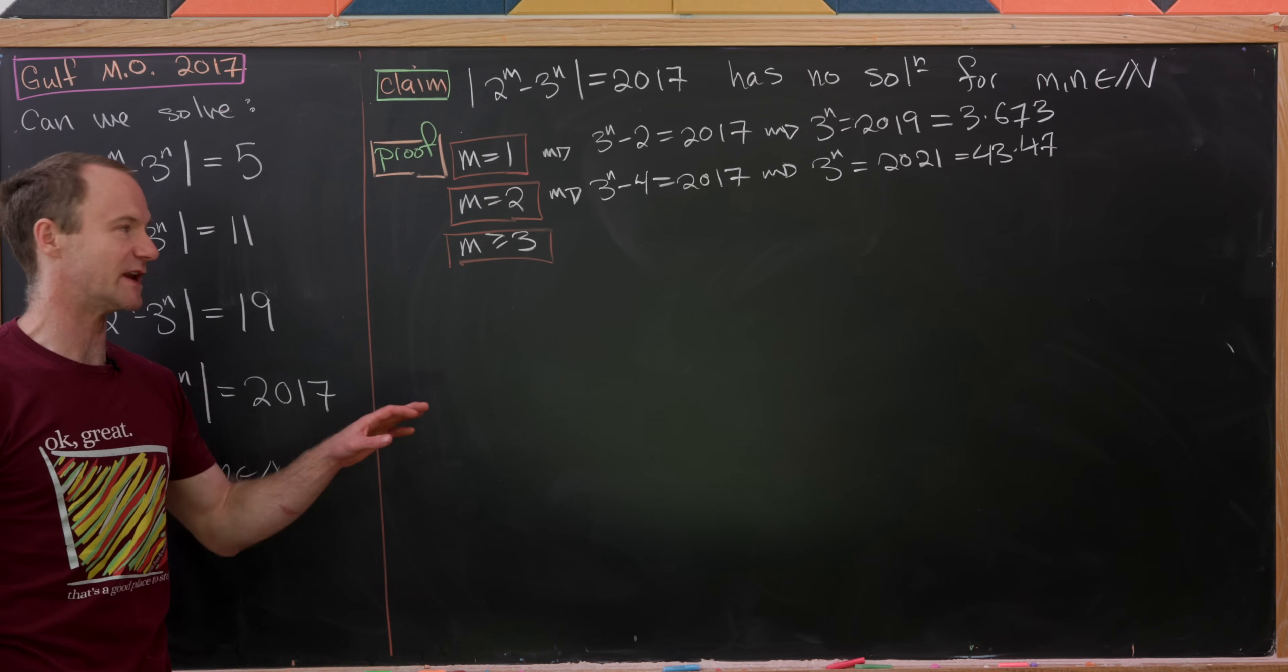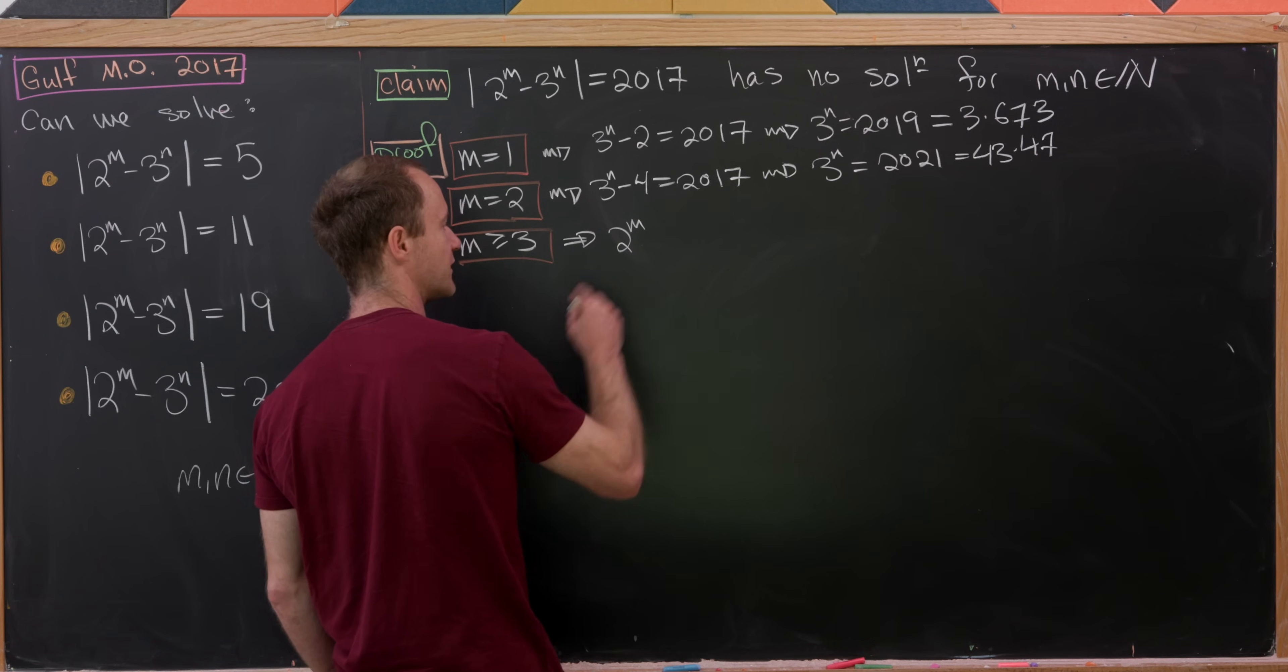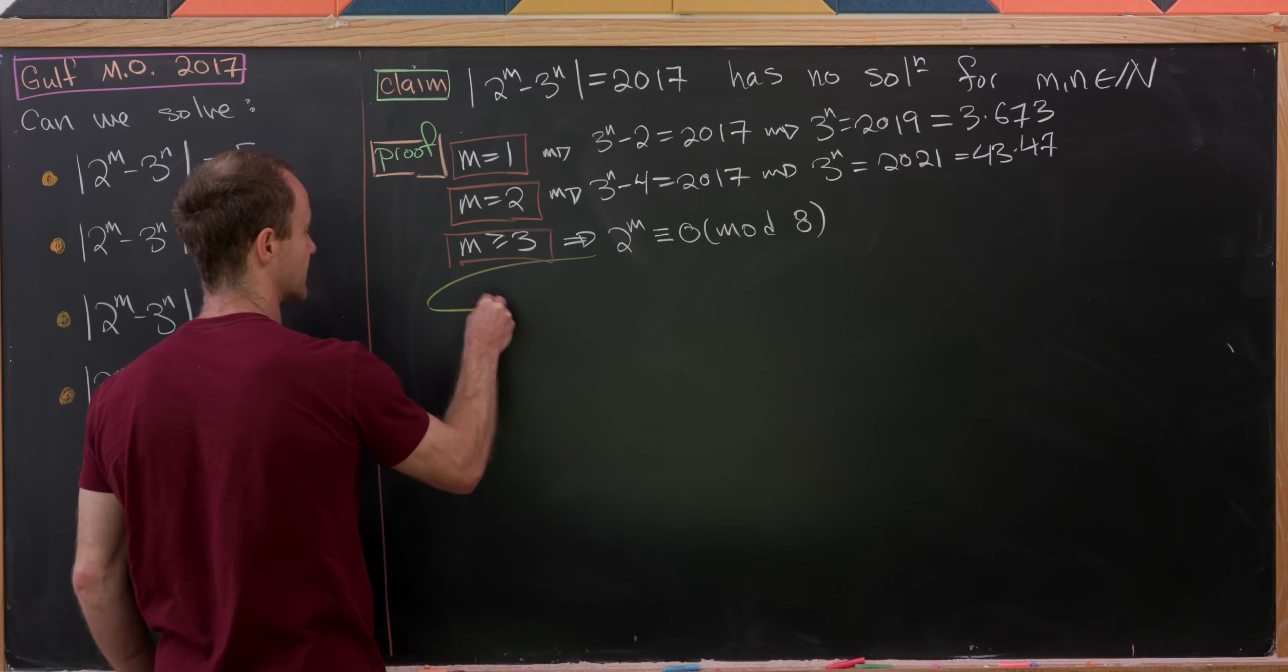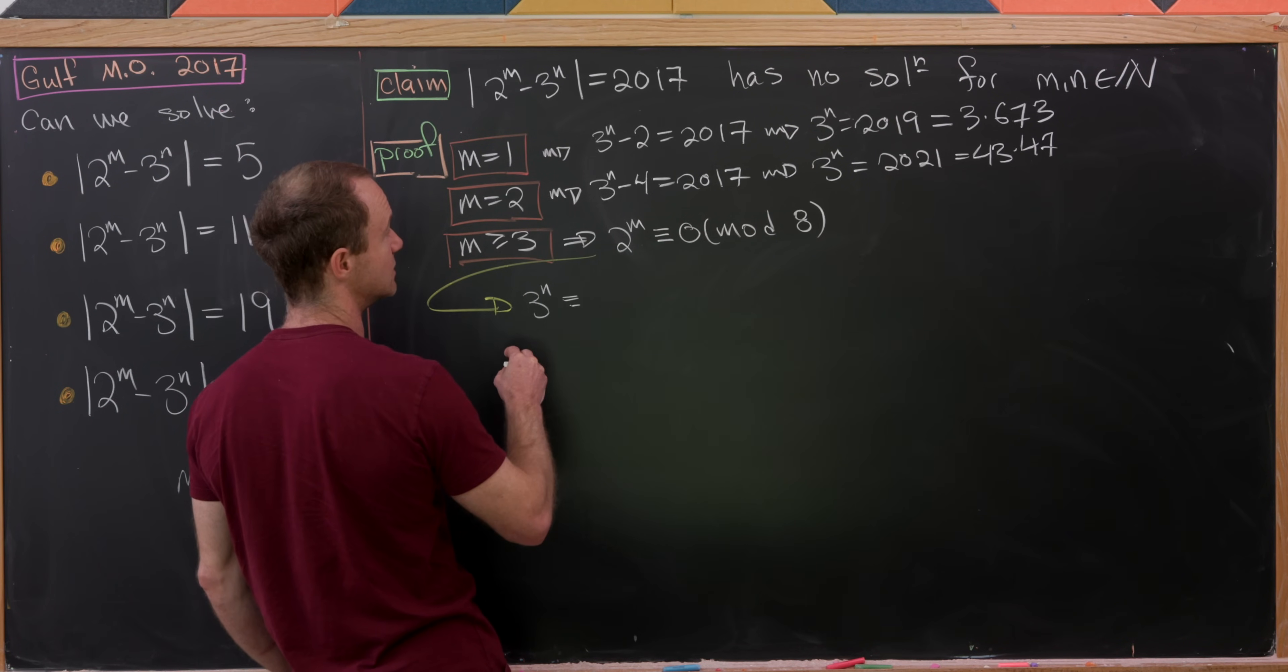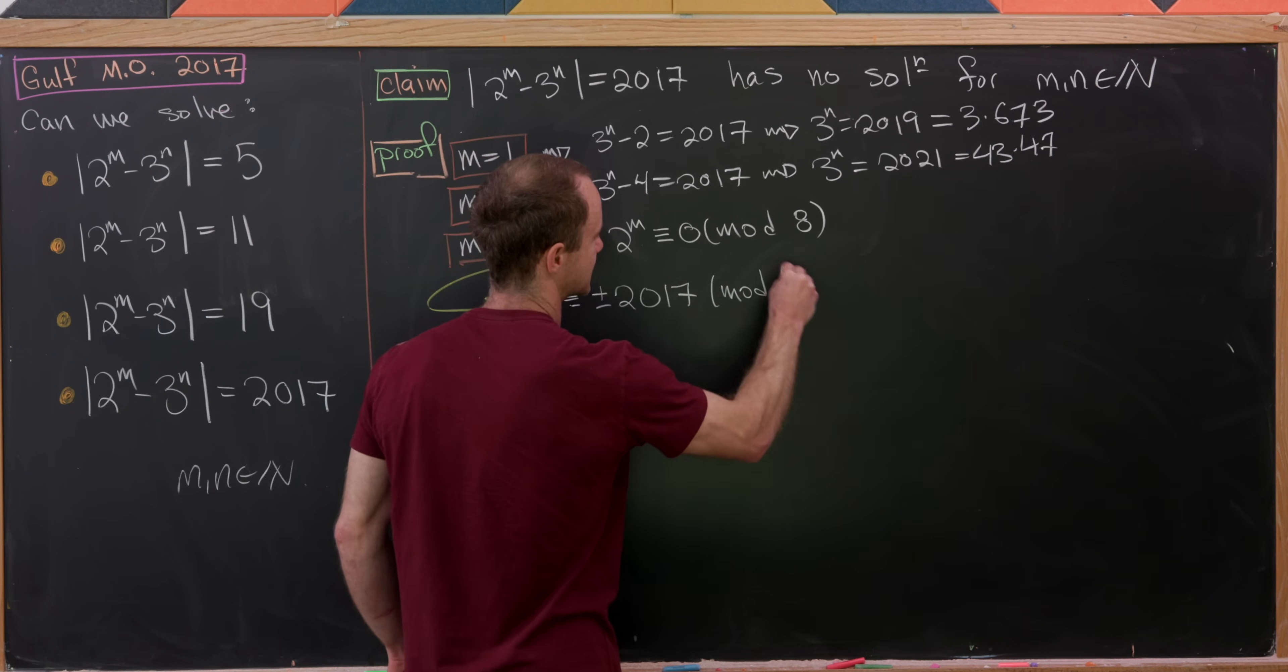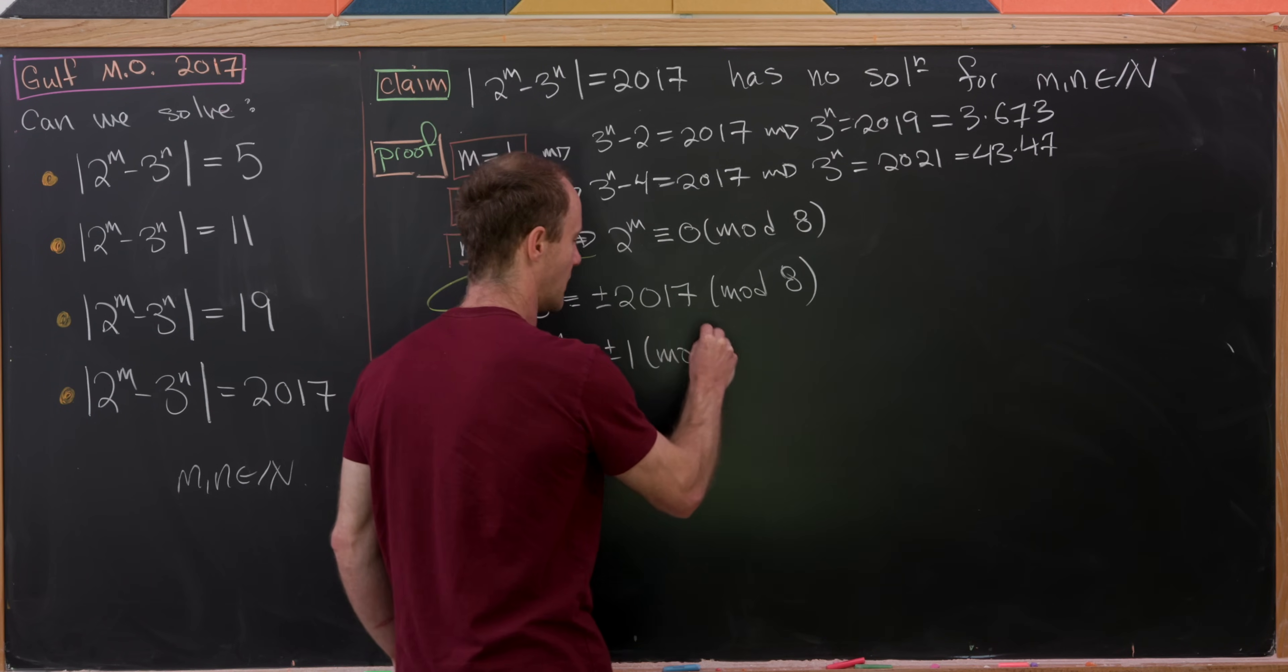So now let's move on to this case right here when m is bigger than or equal to 3 which means that 2 to the m is a multiple of 8. So in other words it's congruent to 0 modulo 8. But if it's congruent to 0 modulo 8 that means we can look at the following congruence. 3 to the n is congruent to plus minus 2017 modulo 8. But let's recall that 2017 was 1 so that means we get 3 to the n is congruent to plus minus 1 mod 8.